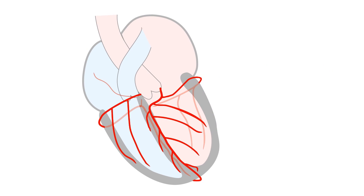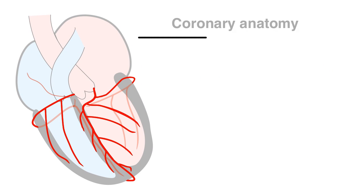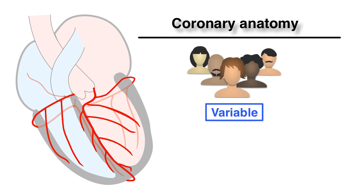It is important to remember that coronary anatomy may be variable and anatomical variations do exist. For example, some people have very prominent wraparound LADs which also vascularize the inferior walls. Nonetheless, the anatomy described in this video is consistent with the most commonly encountered coronary anatomy.